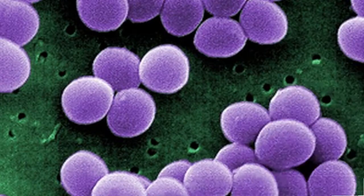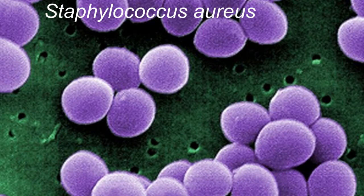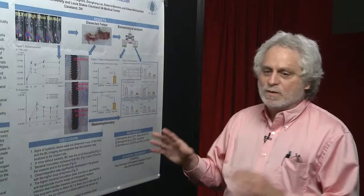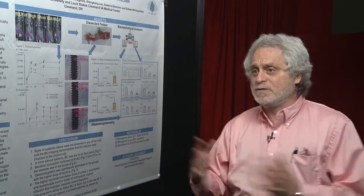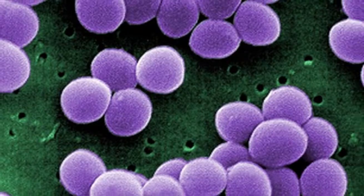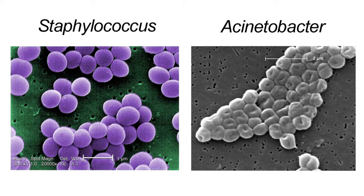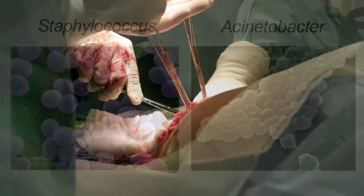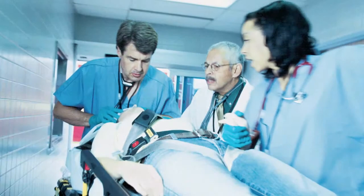This is Staph aureus, which is the most common type of bacteria that causes implant infection both in civilian hospitals as well as in military settings. The other thing we're going to do is use Acinetobacter, which is a very common type of bacteria in military settings and is starting to be seen in civilian hospitals as well.